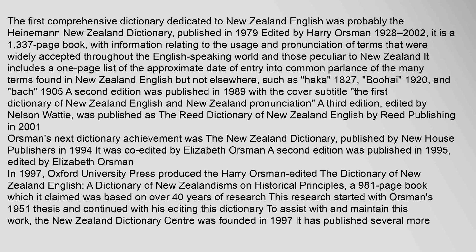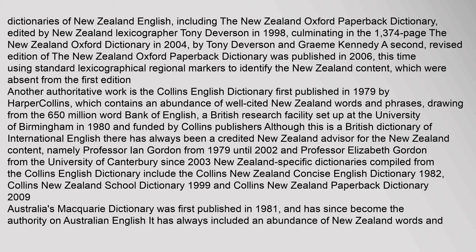Oxford University Press produced the Harry Orsman-edited Dictionary of New Zealand English: A Dictionary of New Zealandisms on Historical Principles, a 981-page book claimed to be based on over 40 years of research starting with Orsman's 1951 thesis. The New Zealand Dictionary Centre was founded in 1997 and has published several more dictionaries, including the New Zealand Oxford Paperback Dictionary edited by Tony Diverson in 1998, culminating in the 1,374-page New Zealand Oxford Dictionary in 2004 by Tony Diverson and Graham Kennedy. A revised edition of the Oxford Paperback Dictionary was published in 2006 using standard lexicographical regional markers.